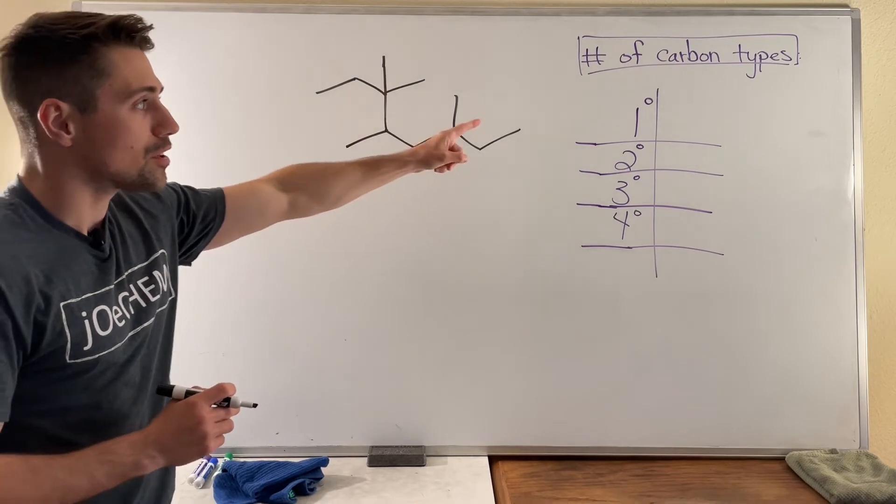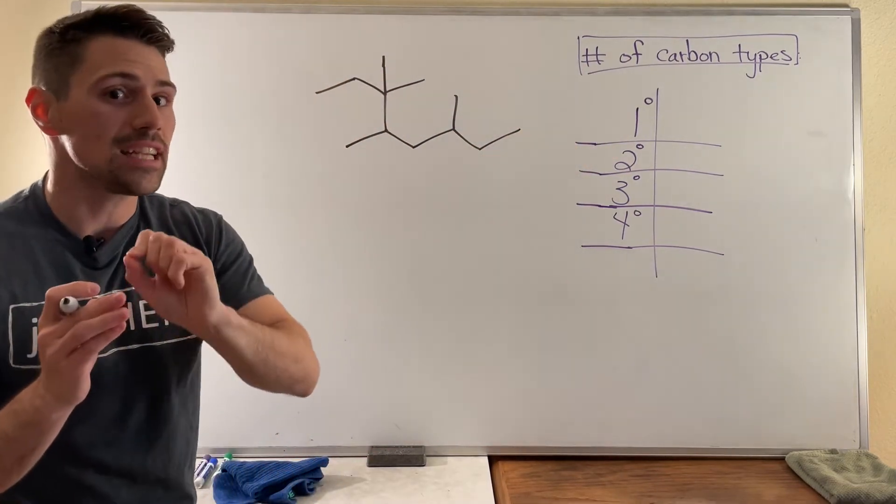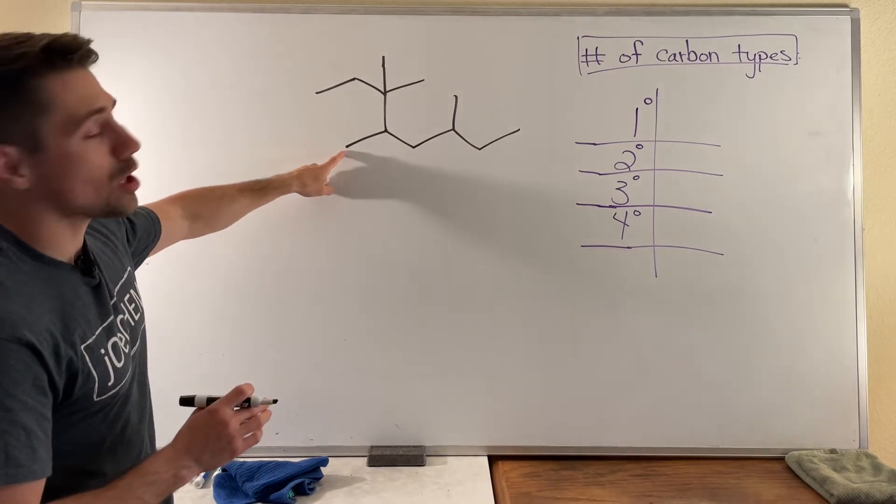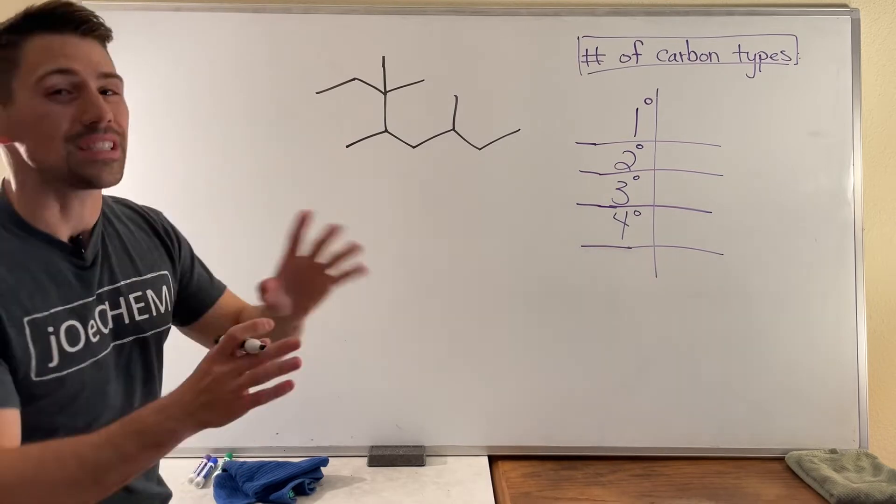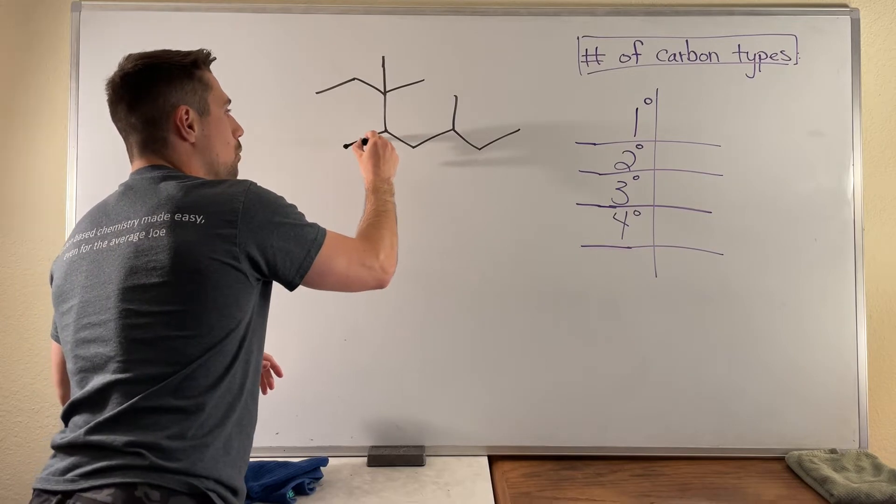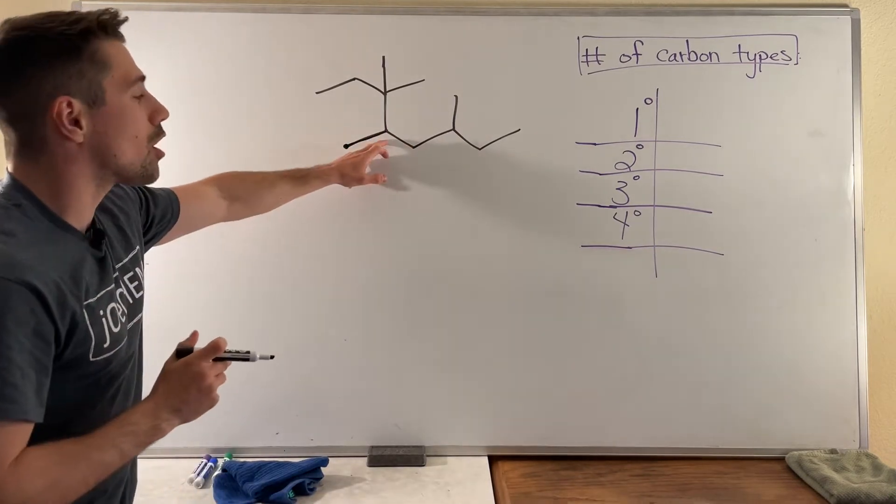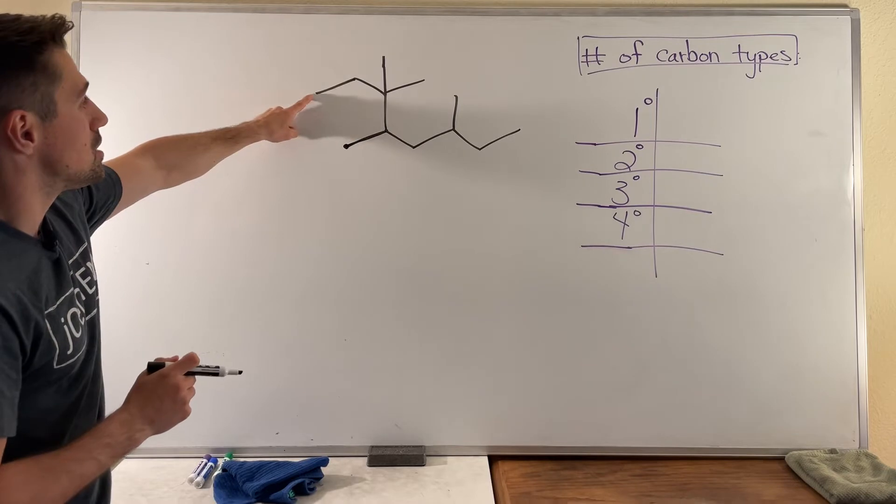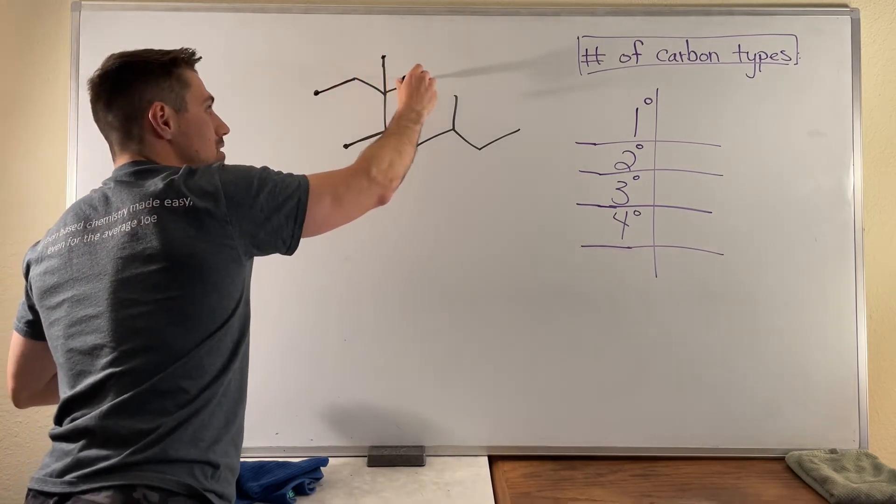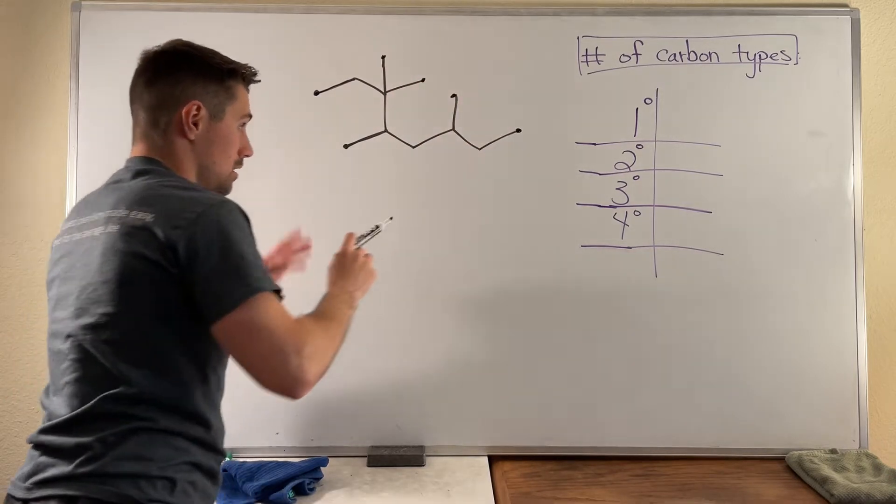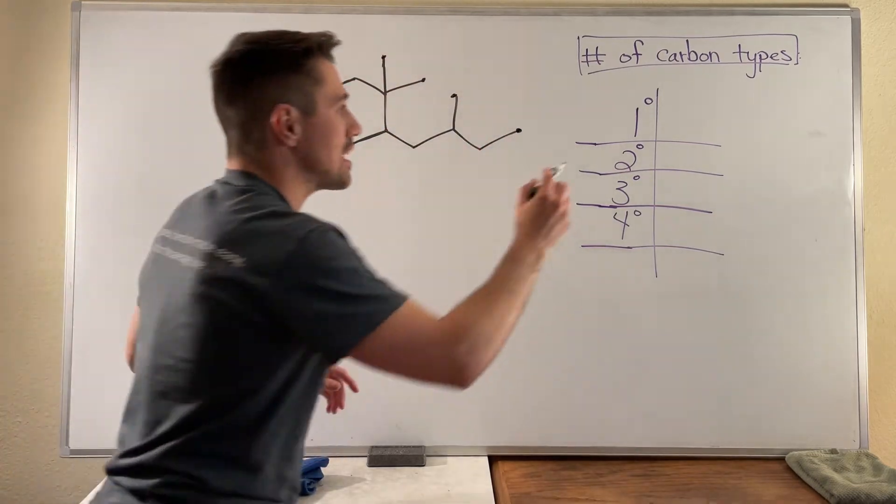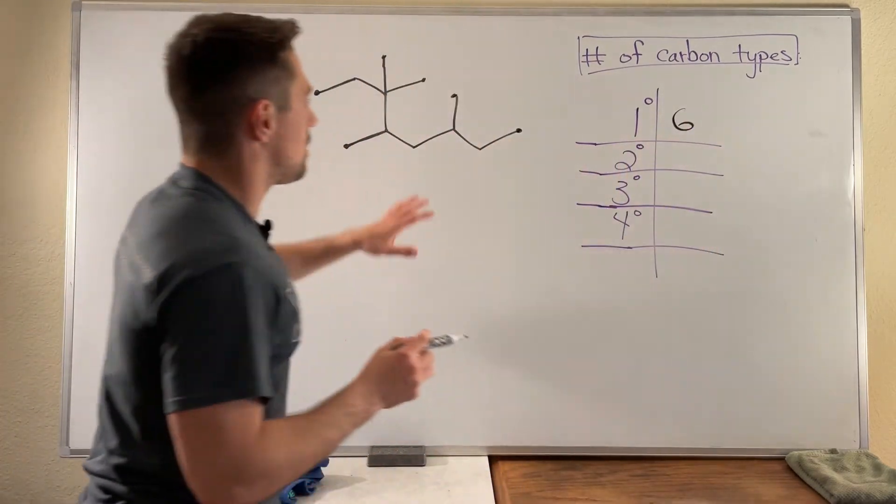So let's start with the primary carbons. Now remember primary carbons are carbons themselves that are only attached to one other carbon. So if for example you look at this carbon right here, this is a terminal carbon, it's on the end of a structure. As a result, because it's on the end, that means it only has one bond to one other carbon. So this is a primary carbon. You can see up here this is a primary carbon, so is this, this, this, and this. So one, two, three, four, five, six. That means we have six primary carbons in this structure right here.